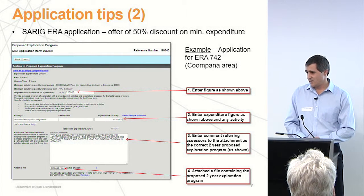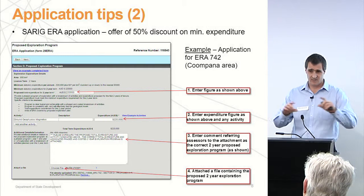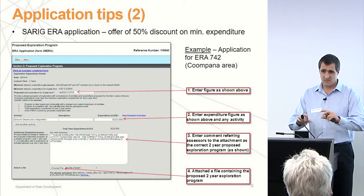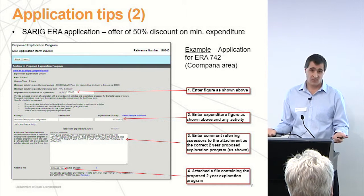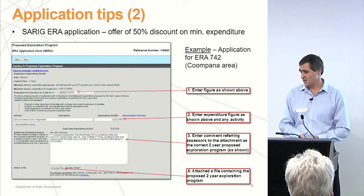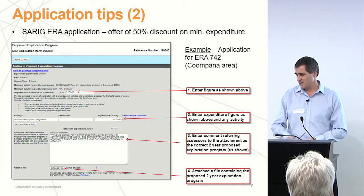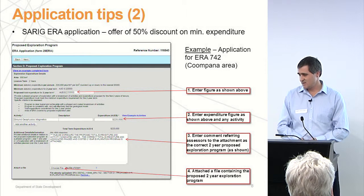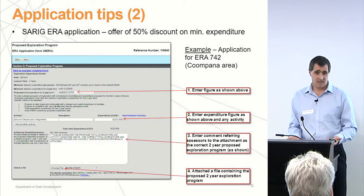One other thing — if you're applying on SARIG, we've offered a 50% discount on the minimum expenditure, but our system isn't set up for that. There's a rule saying that if your program doesn't meet the minimum, you'll get red errors. So if you want to put in a program less than the standard commitment, fill out the expenditure box to meet the standard commitment and nominate any activity there, but put your actual program in an attachment. Tell us you've done that in the information box, and then we'll know to disregard that entry and just take the proposal from your attachment.